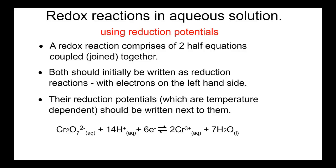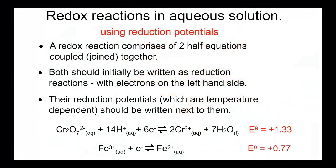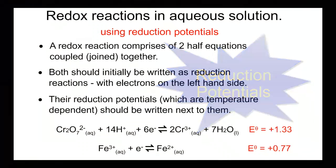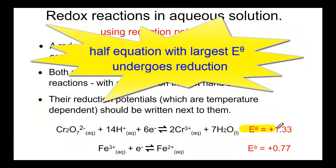Here's an example. We have the half-equation for the reduction of dichromate ions, where chromium is present on the left in the plus-6 oxidation state, and plus-3 on the right. You can see that its reduction potential, or E-theta value, is plus 1.33 volts. Below it, we have the half-equation for the reduction of iron 3+ to iron 2+, with an E-theta value of plus 0.77 volts. So what do we do with these half-equations to produce a redox equation?